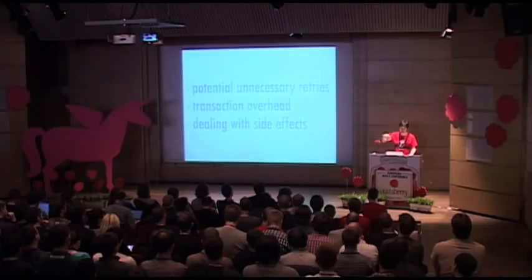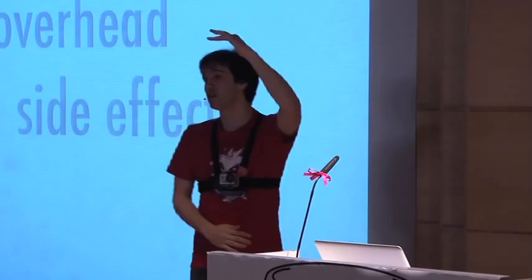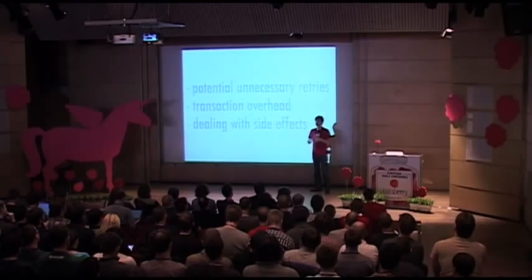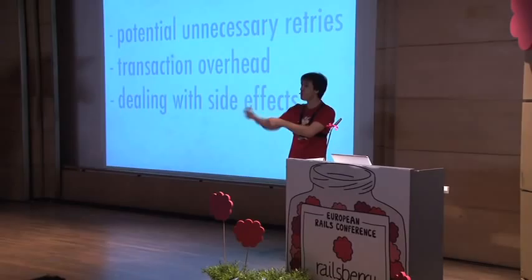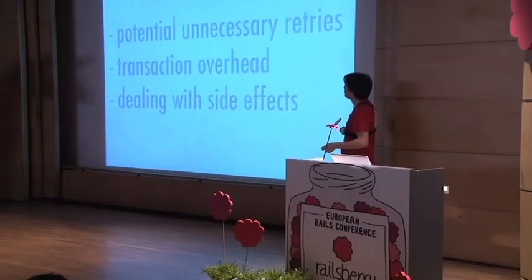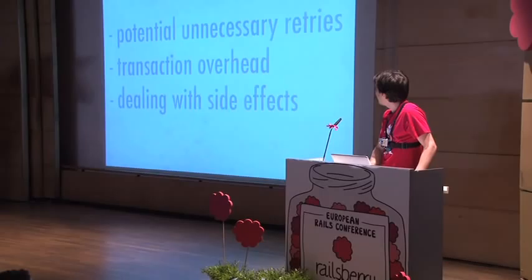However, STM has downsides. First, potentially unnecessary retries — if thread one is always executing and changing the value, thread two can never commit. This also happens in databases with high-concurrency queries. There is also transaction overhead: the runtime needs to track reference values before and after the atomic block. And there's the question of side effects — if you've written to a file inside an atomic block, how do you roll that back? Clojure likely handles this by not allowing such operations inside the atomic block.